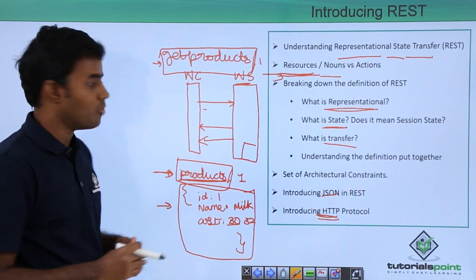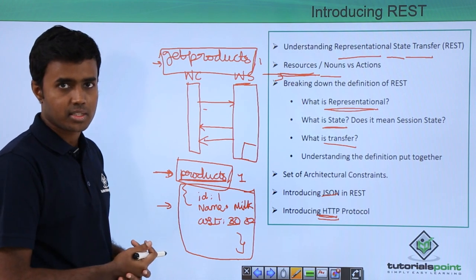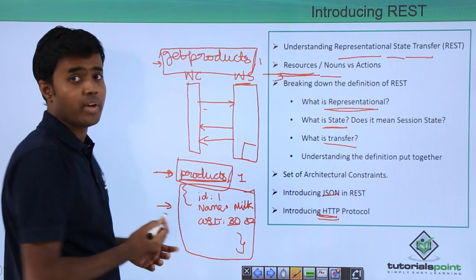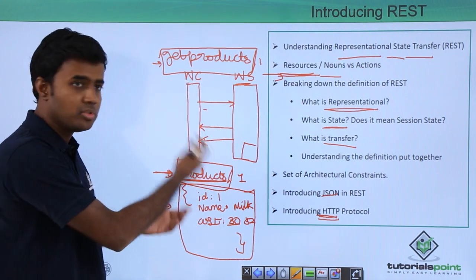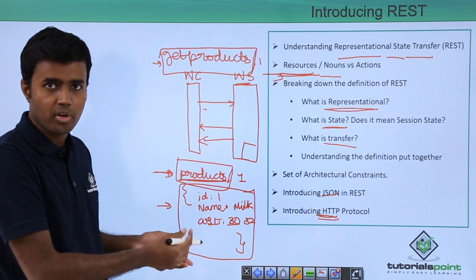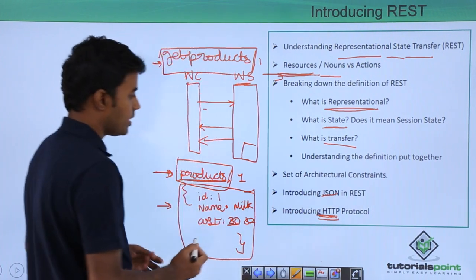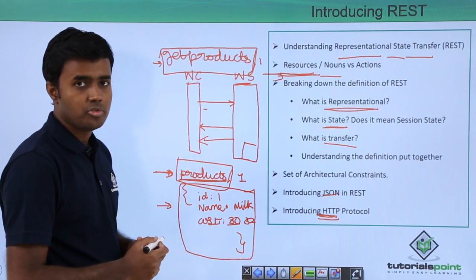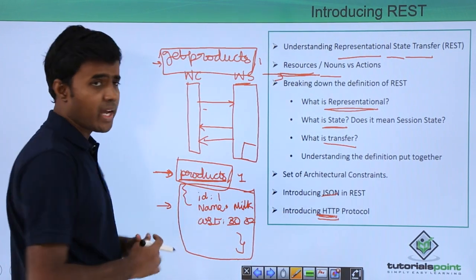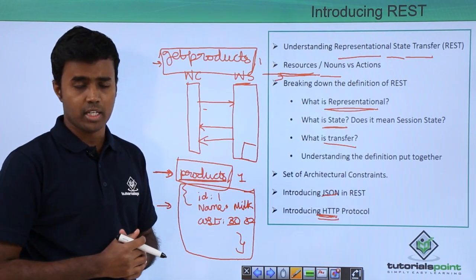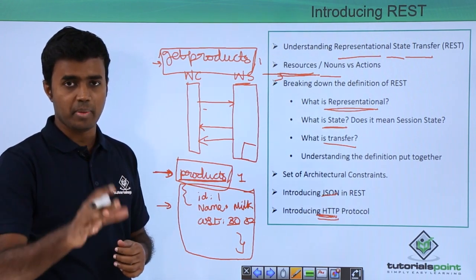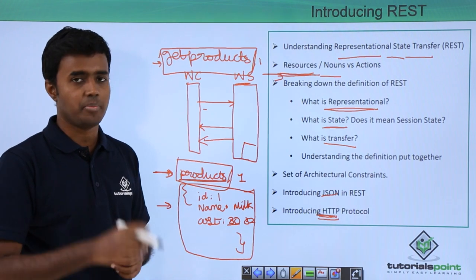If I give a URL saying localhost slash product slash one, how will the server understand what I need to do with this particular request? Do I need to get the product? Do I need to delete the product? Do I need to save the product? Do I need to update the product? To clarify all this, we use HTTP protocol. And in HTTP protocol, HTTP has four verbs: HTTP GET, HTTP POST, HTTP PUT, HTTP DELETE.